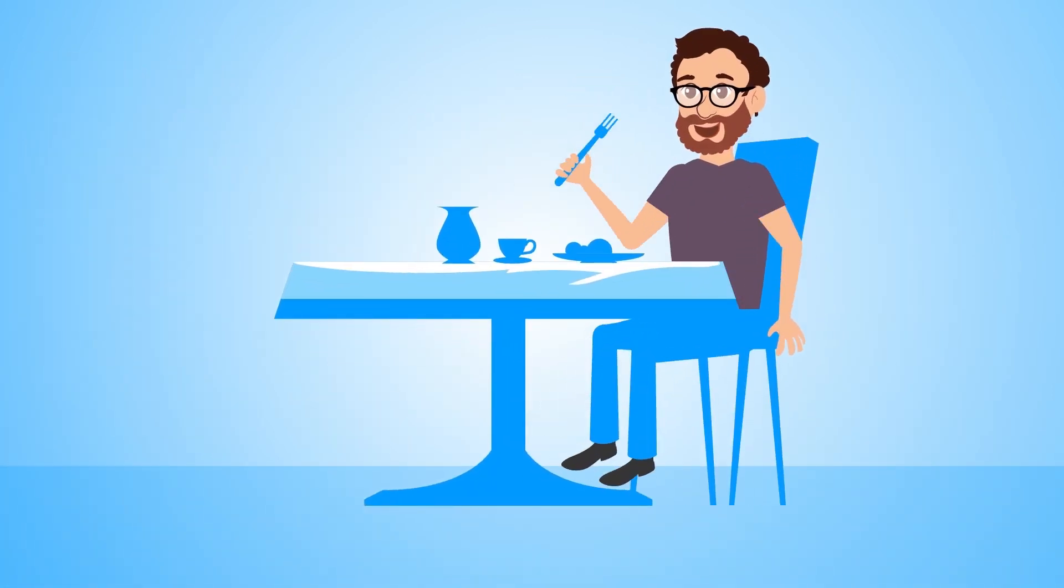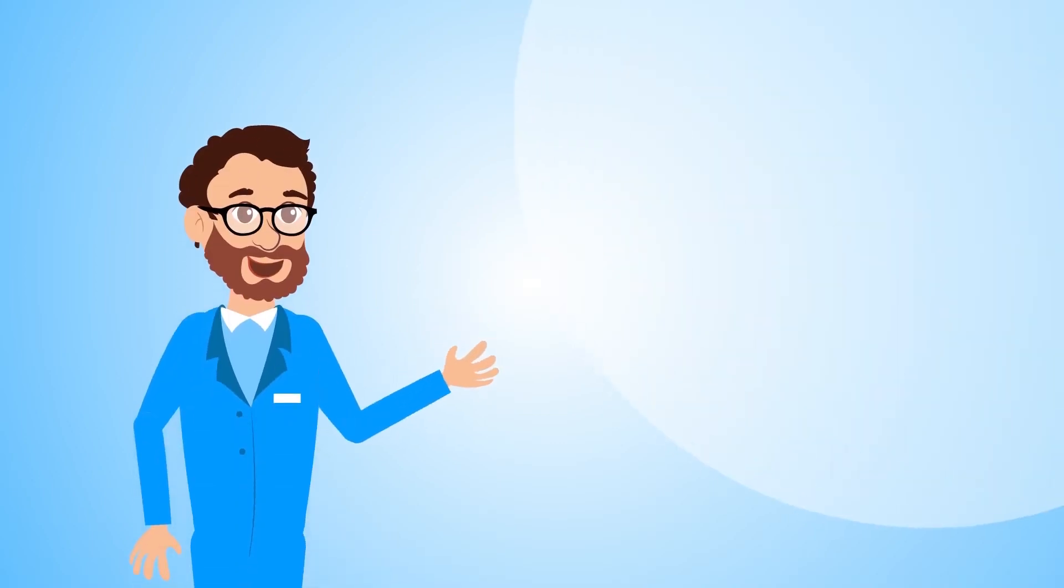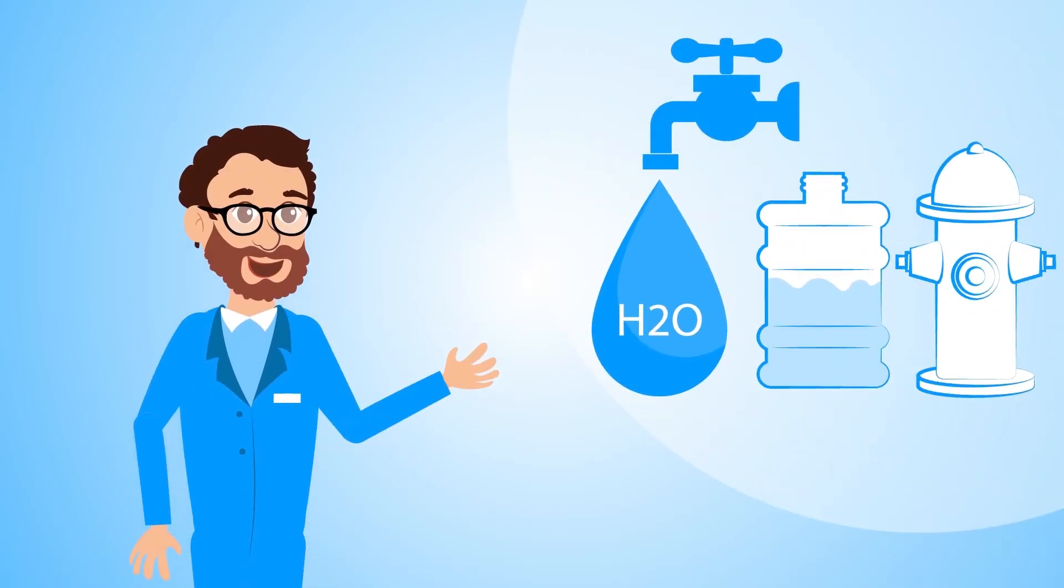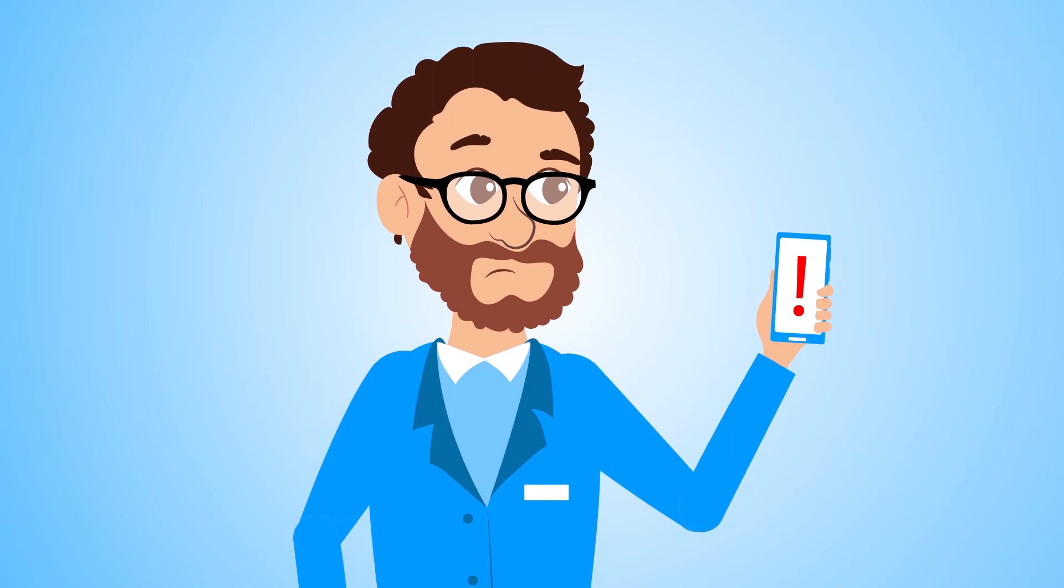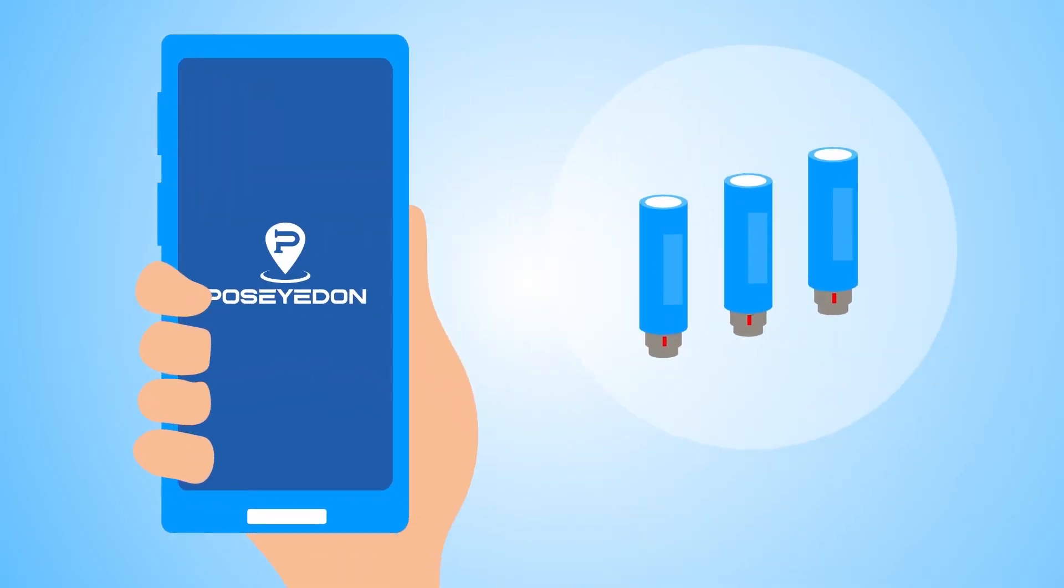Here we see Louie having breakfast. Louie is a team leader at an urban water company. His cell phone shows a text warning. In his Poseidon app, it shows several noise loggers with suspicious values.